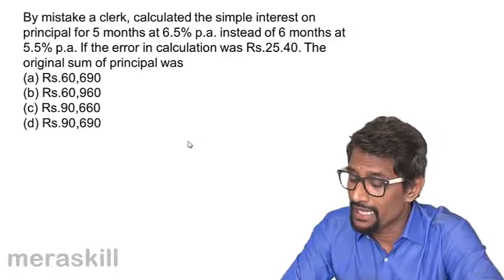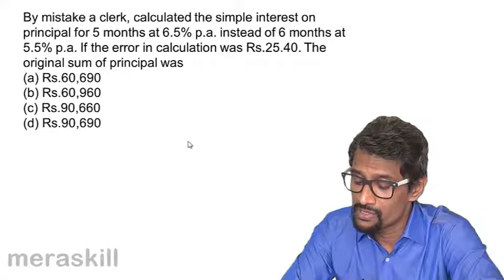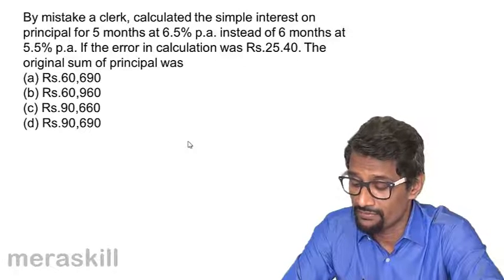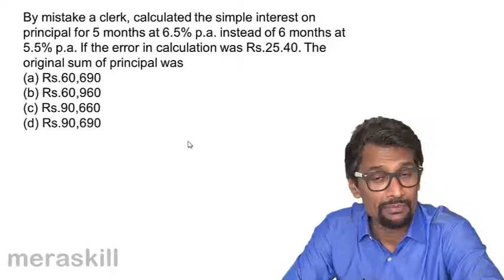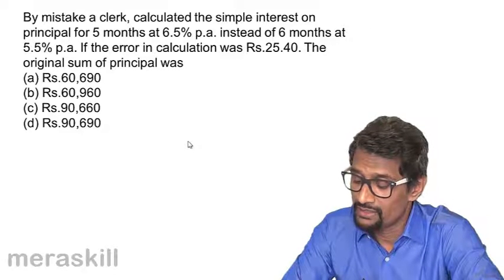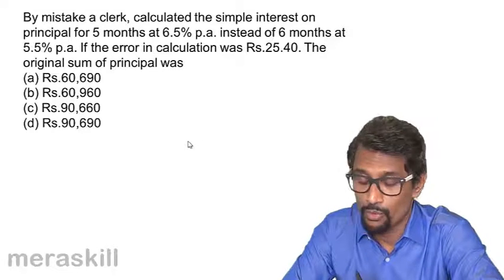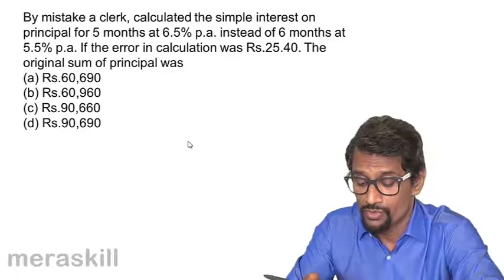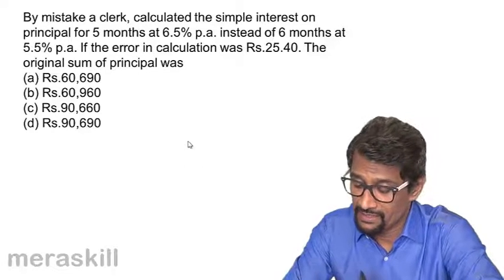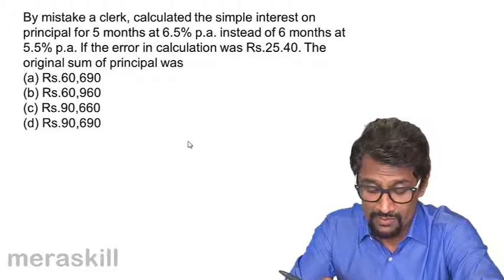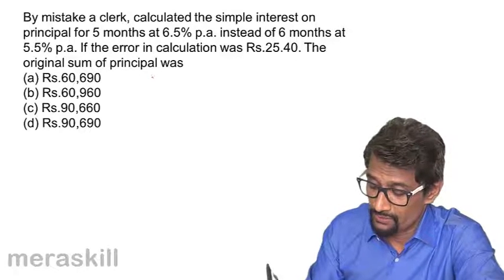by mistake, a clerk calculated the simple interest on principal for five months at 6.5% per annum instead of six months at 5.5% per annum. If the error in calculation was Rs. 25.40, so in that case, what will be the original sum of principal?